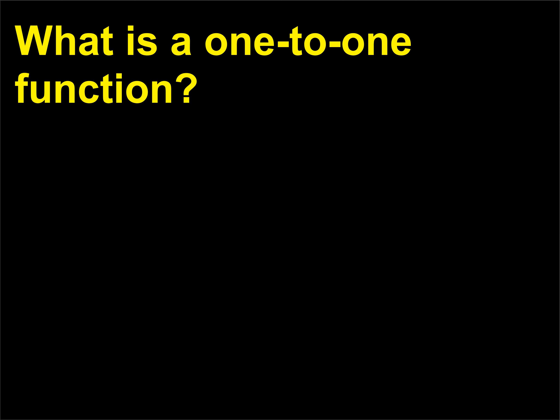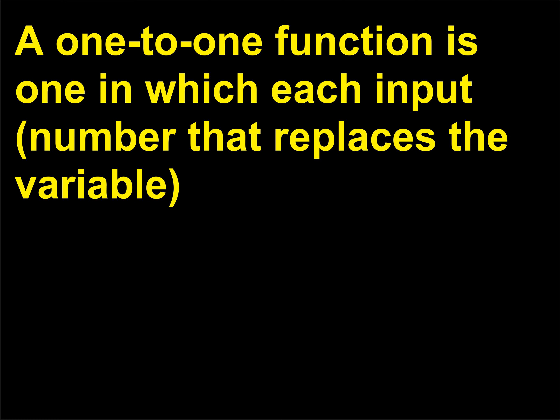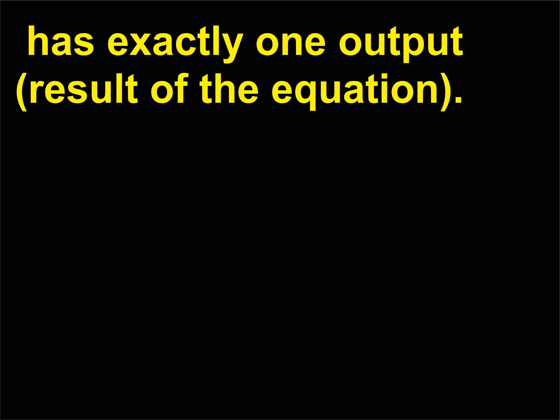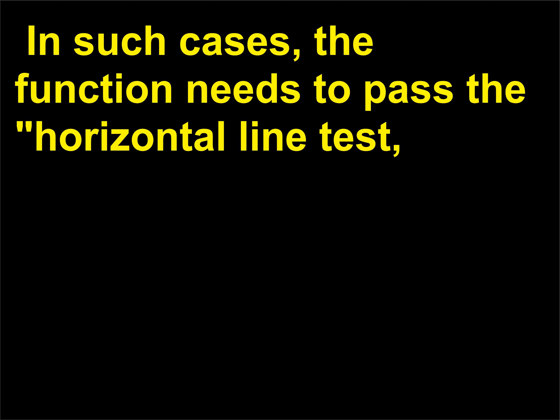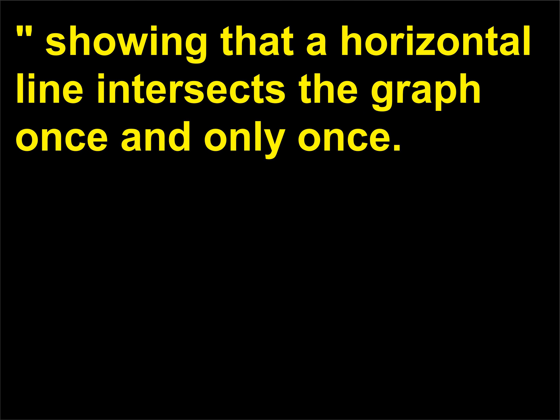What is a one-to-one function? A one-to-one function is one in which each input — the number that replaces the variable — has exactly one output, the result of the equation. In such cases, the function needs to pass the horizontal line test, showing that a horizontal line intersects the graph once and only once.